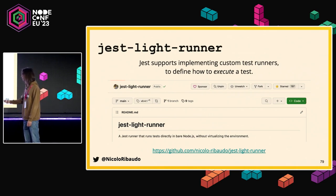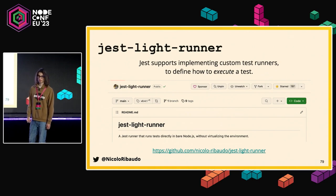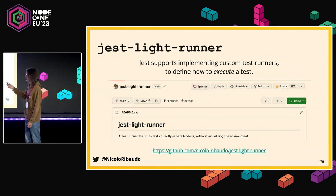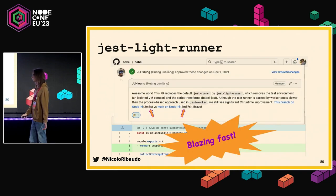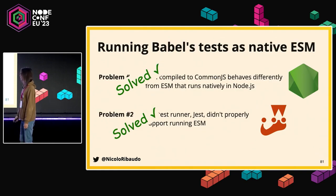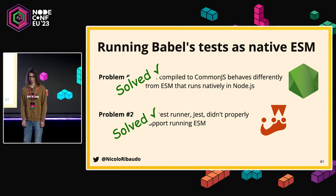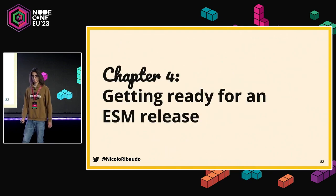What we did was rip out all the virtualization Jest does and just rely on Jest's interface while still running tests in bare Node without all the extra machinery. This started as a script in our own monorepo; then Prettier also wanted to use it, so we published it as a separate package. When we started using it, our tests got much faster — the time needed to run the test suite went down by more than 50%. We solved problem two not by fixing Jest's ESM support, but by avoiding the problem altogether.